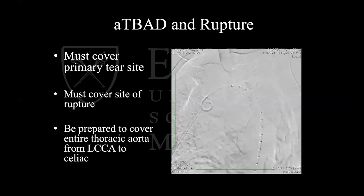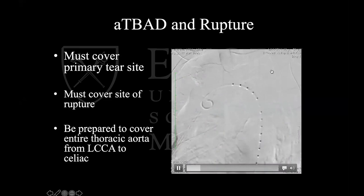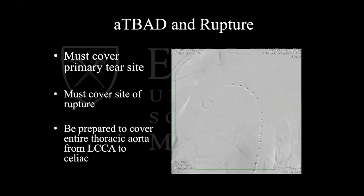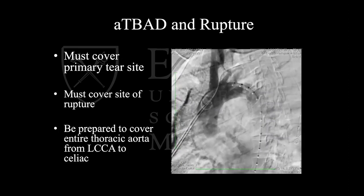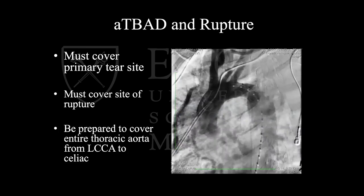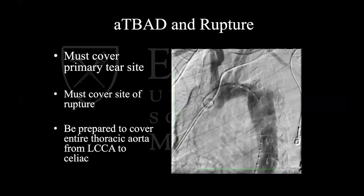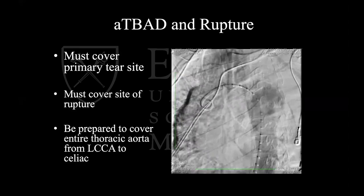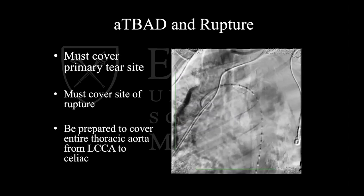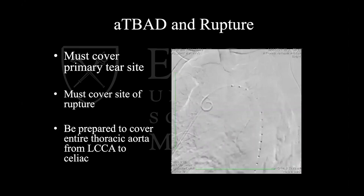Rupture is a special situation. Usually when they come in with a rupture or impending rupture, you don't see the site of extravasation on aortogram. So you have to cover from the left carotid all the way to the celiac — you don't want to do limited coverage, get upstairs, and then have hypotension without knowing if they're still leaking. We've adopted techniques from TAVR and now do these ruptures awake. I lost a patient once — anesthesia induced them and the physiologic changes caused the aorta to rupture and we couldn't get them back.